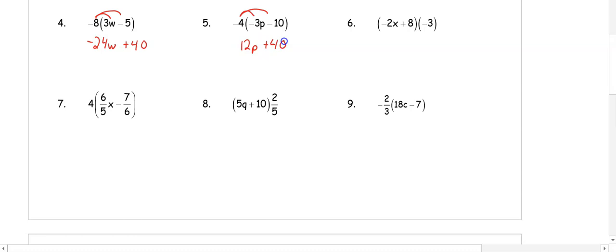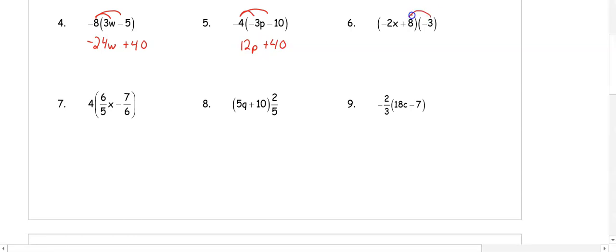In number 6, the number is again behind the parentheses, so we distribute negative 3: negative 3 times negative 2x is 6x, and negative 3 times 8 is negative 24.